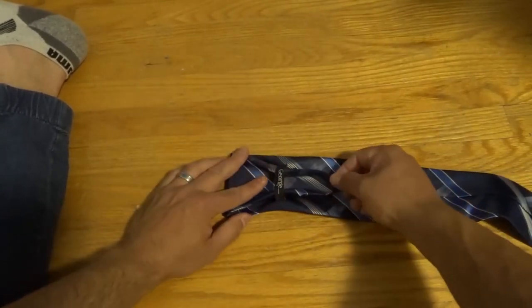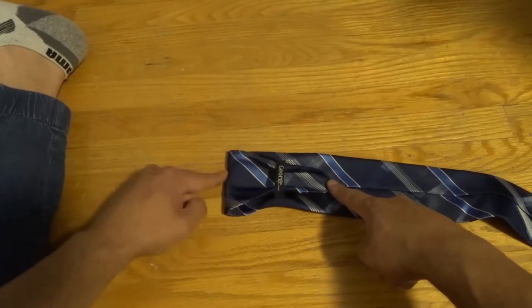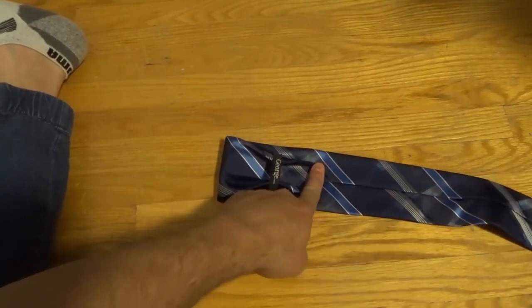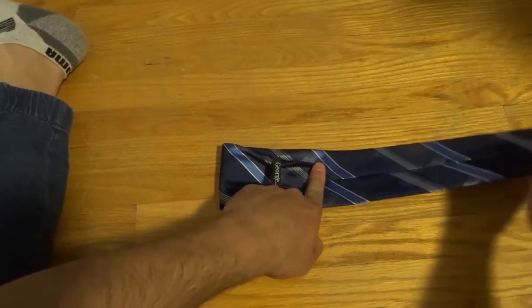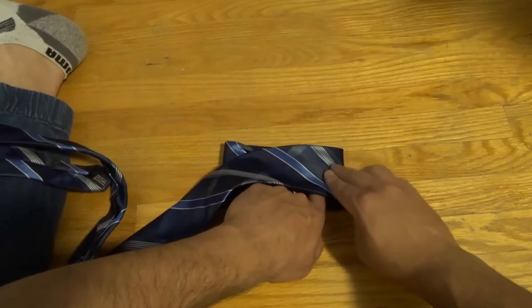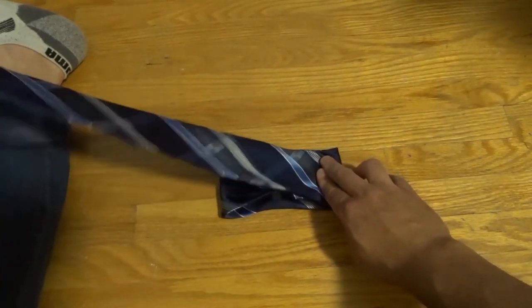Now, right over here, this is going to be one end of the bow tie. This is going to be the other end. So you want to take your finger, place it down here to hold this in place, and then you're going to fold the tie over just like this. So fold that tie over just like that. That's one fold.